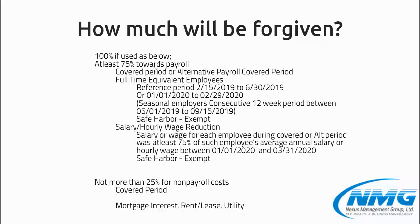For the 75% payroll expenses, we look at a particular period of eight weeks — 56 days — which is referenced as the covered period or alternative payroll covered period. Full-time equivalent employees: did you maintain the same number of employees during the covered period? Did you maintain the same salary, or was there a reduction? There cannot be more than a 25% reduction in salary, and there cannot be a reduction in full-time employees — otherwise, the forgiveness will be reduced to that extent.